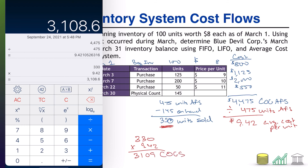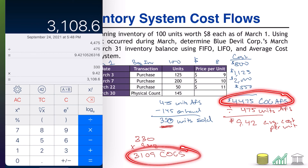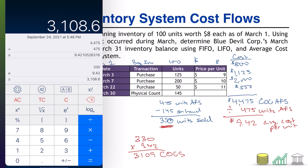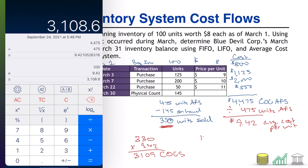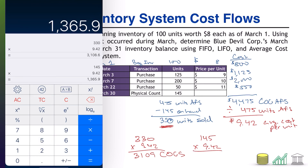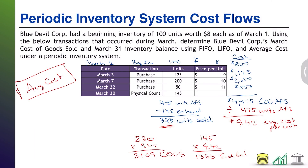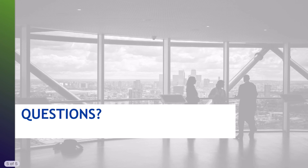Just like under LIFO and FIFO, you could subtract this COGS of $3,109 from the cost of goods available for sale and the difference would be your ending inventory. With average cost, there's also an equally easy alternate approach: we know there are 145 units on hand, and those units — just like the ones we sold — are worth $9.42 each. So 145 times $9.42 gives us $1,366, and that is our ending balance. That is how you do average cost — all three methods under a periodic system. Hope you found this helpful and I hope you join me for another.